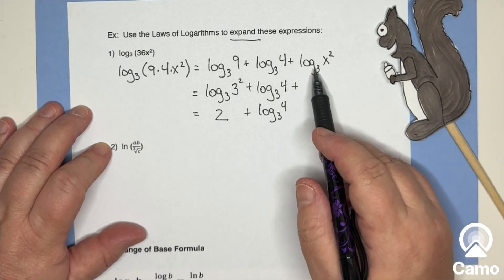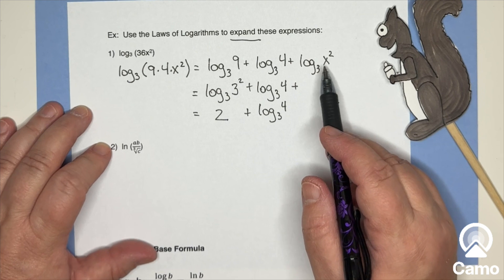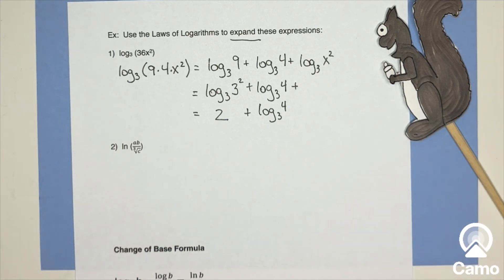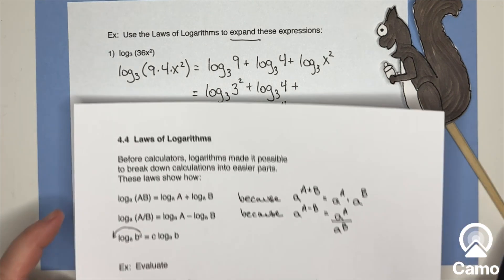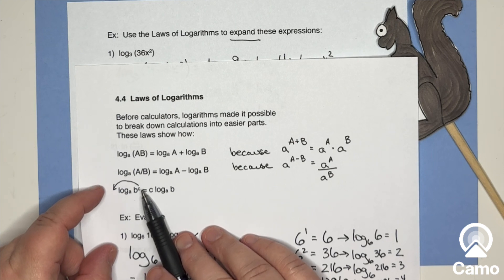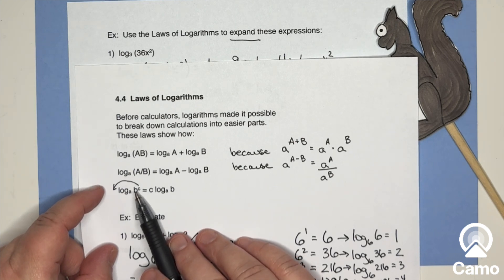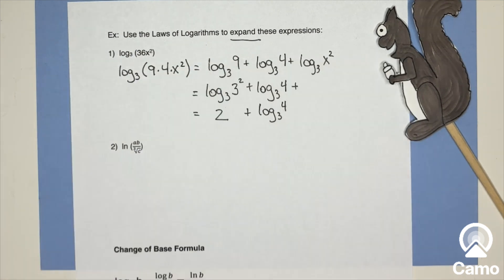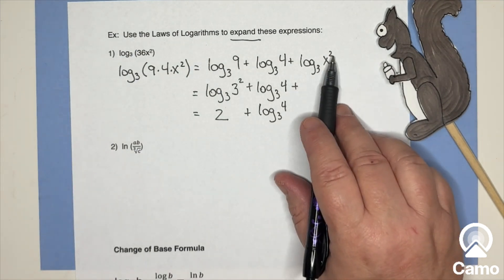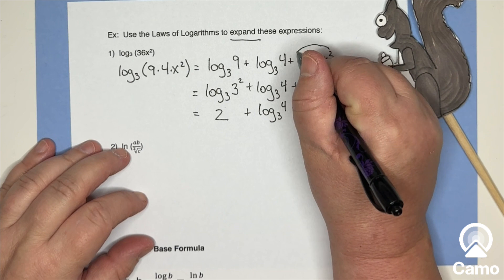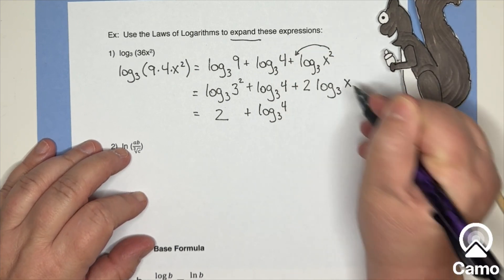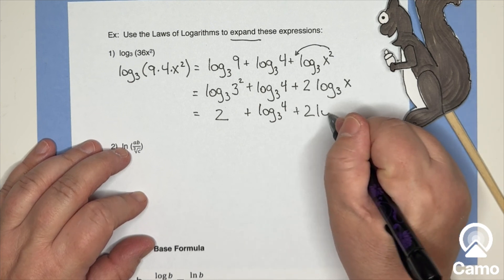Now, why didn't I write this one? Well, even though we don't know what x is, we have x raised to a power. And I'll remind you, one of the laws that we haven't used yet is that if you have an exponent on this argument here, b to the cth power, the c comes down in front. So since I've got x squared, the squared's going to come down in front and I get two times log base three of x.